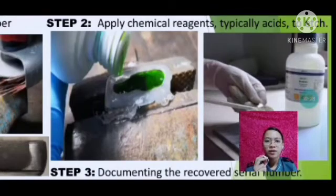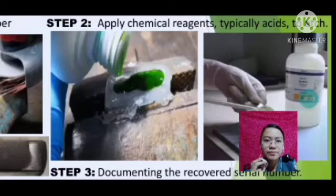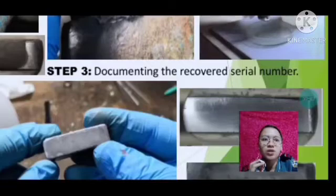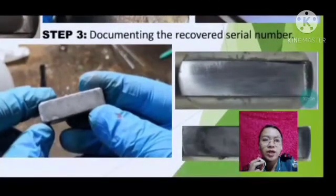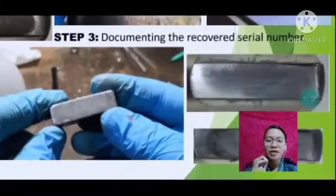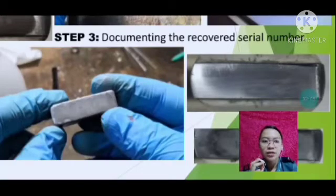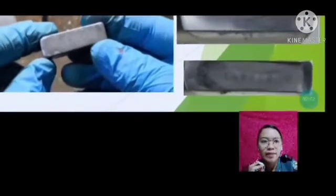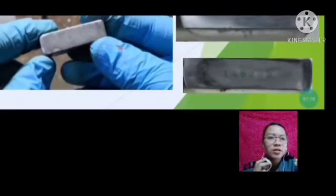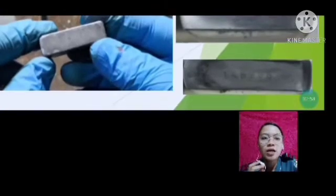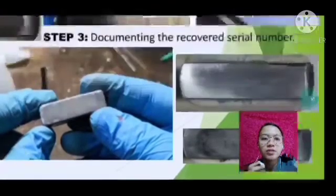After polishing with sandpaper and applying the chemical, the serial number can be revealed. Step three is documenting and recording the recovered serial number. After polishing and applying the chemical, you document what serial numbers become visible. An example of a recovered serial number is 1-4-5-9-5-5. That is an example of a rebuilt serial number.